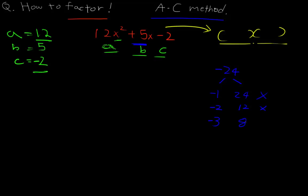So -3 plus 8 becomes 5. This works out. I know that my A-C method solution is these two. Now what we've got to do is break this middle term into two different sections.